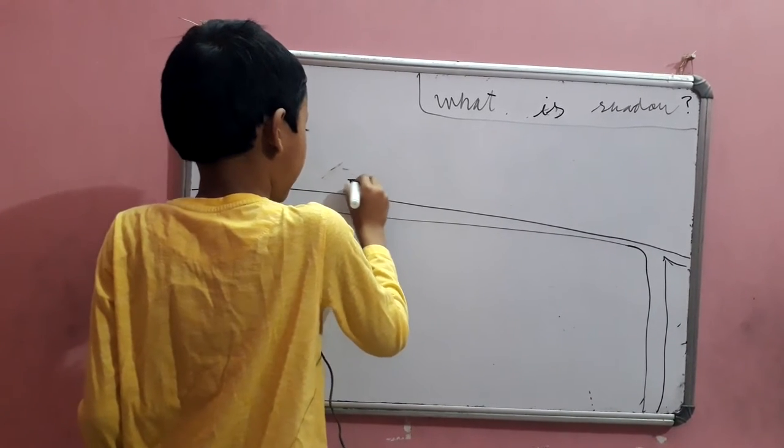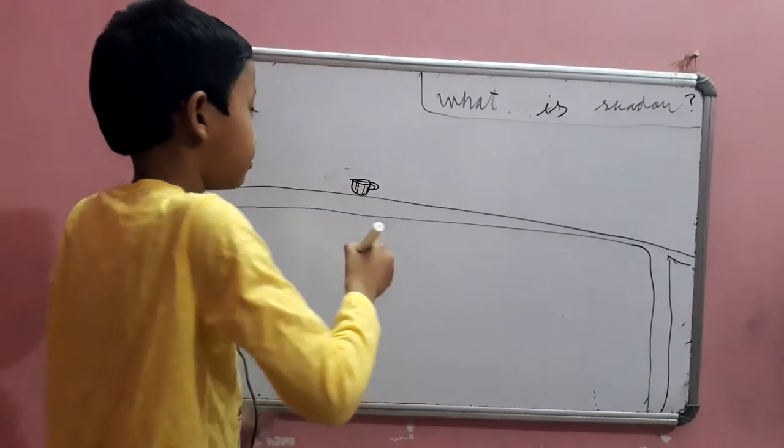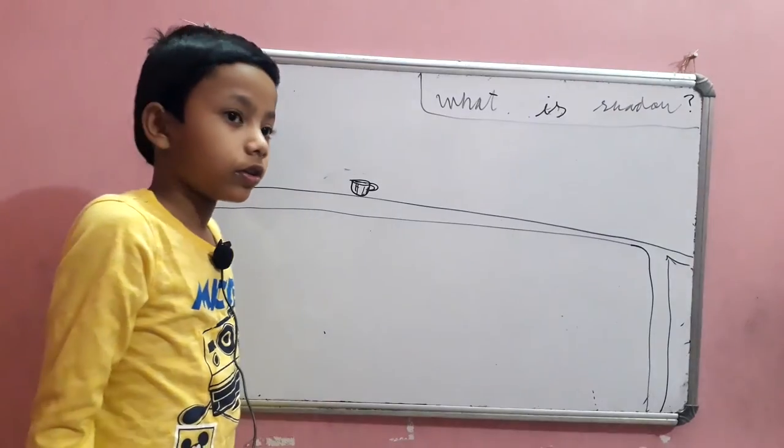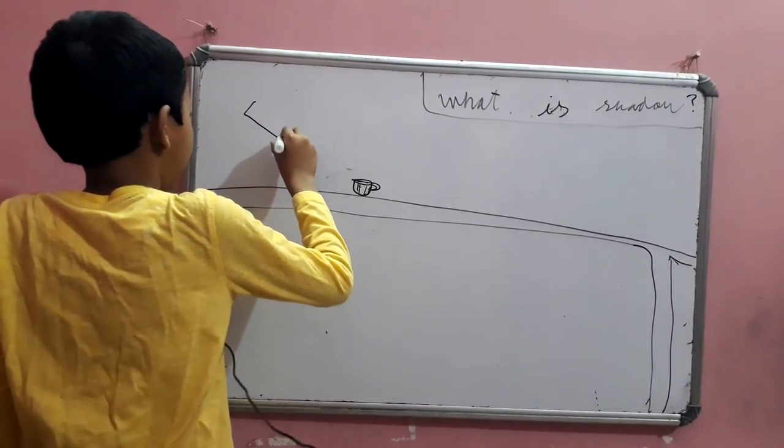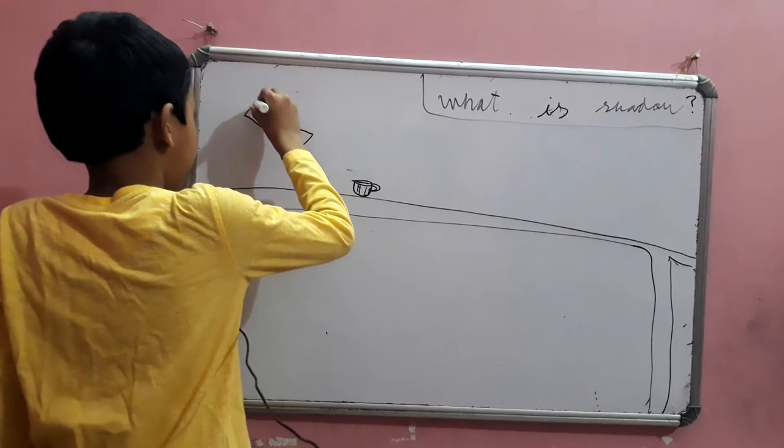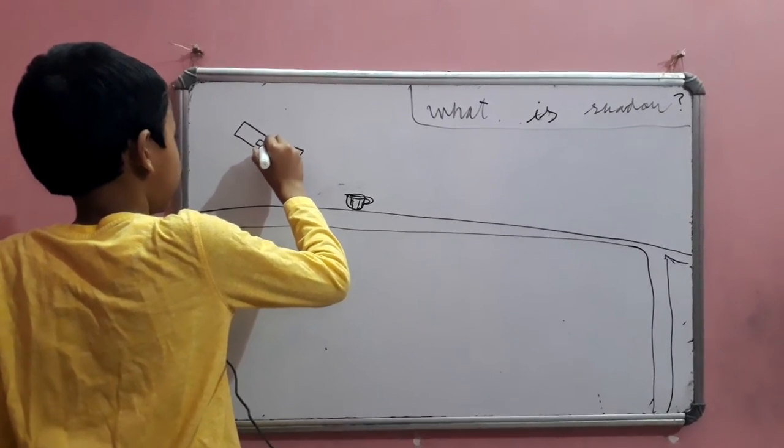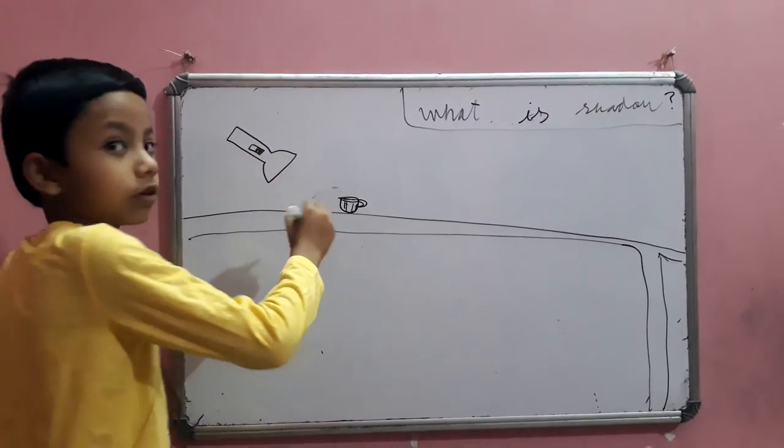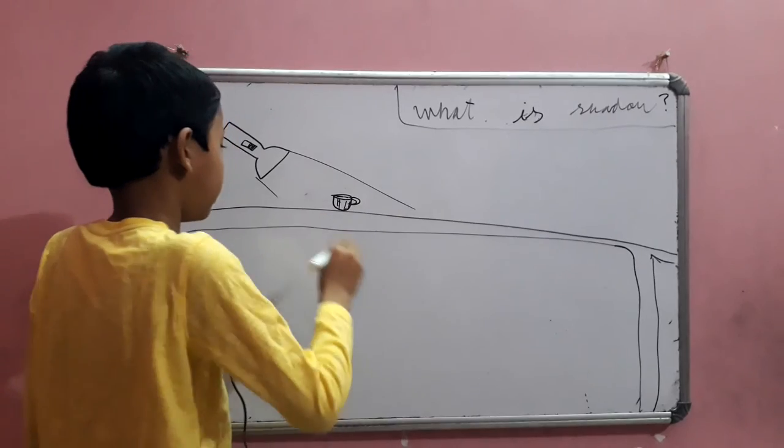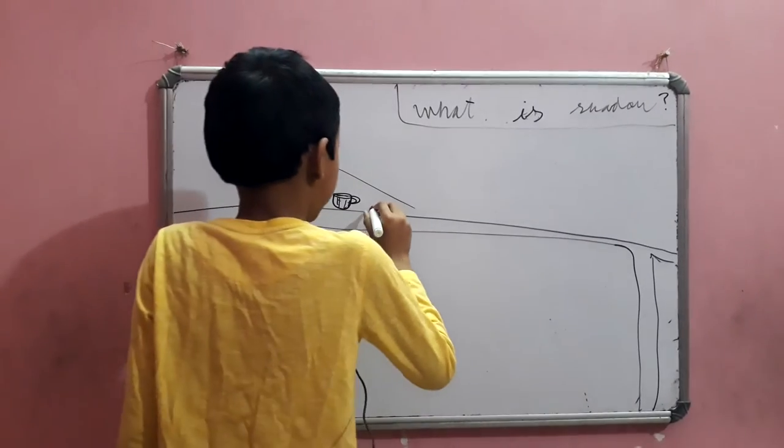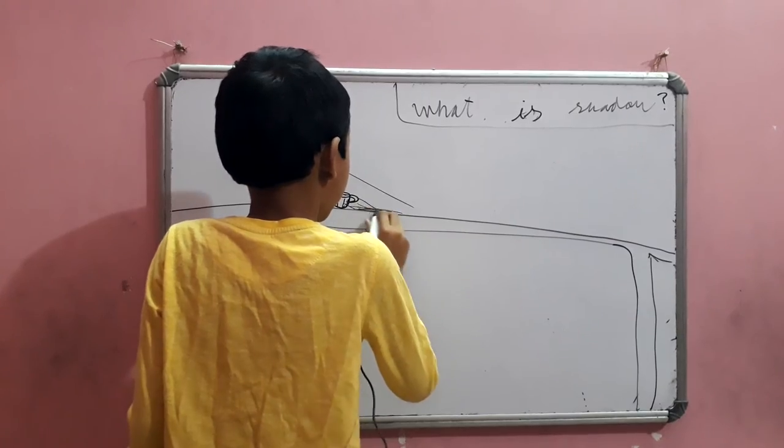So, here's the teacup. And you have to switch off the light. And now you have to turn on the torch and press the button. Now there's a light, and there is the shadow. It now appeared.